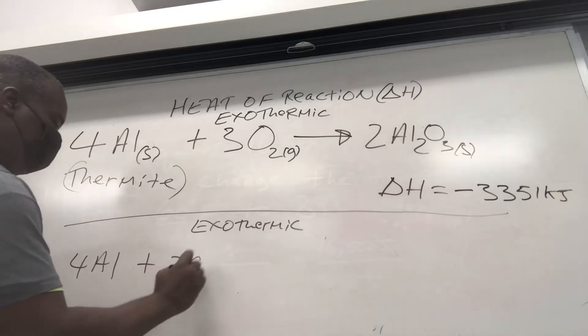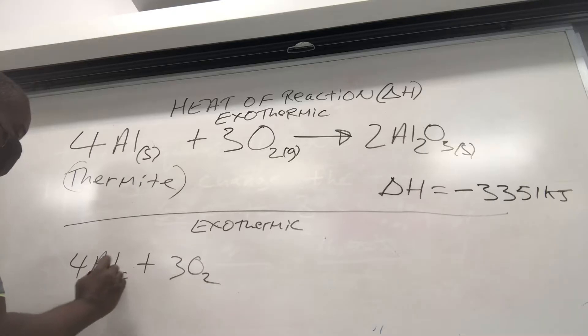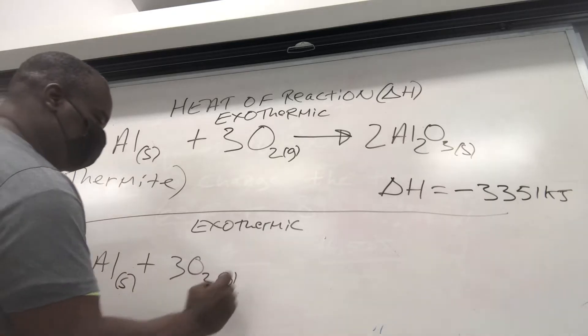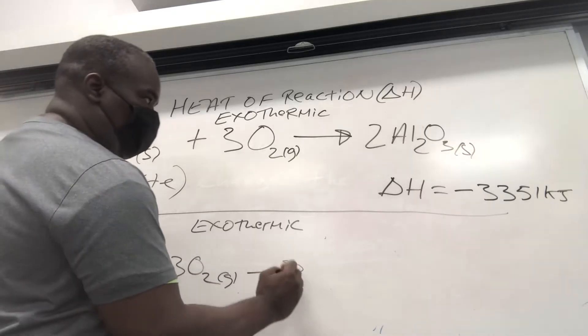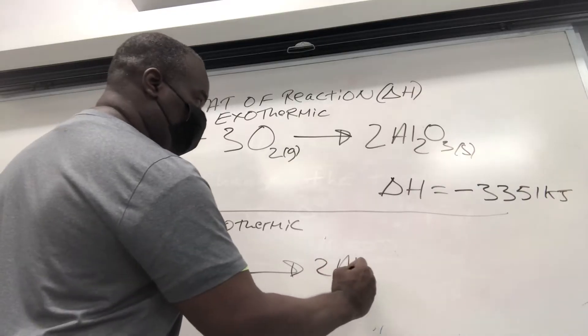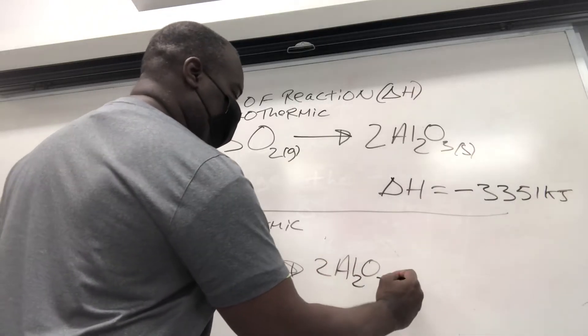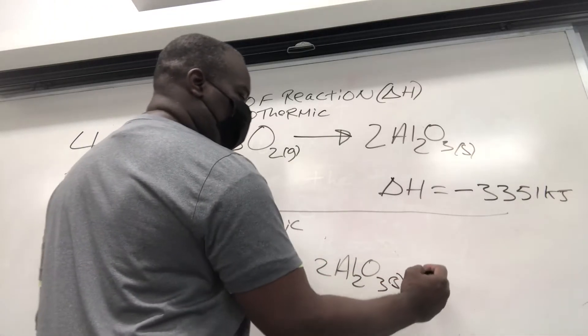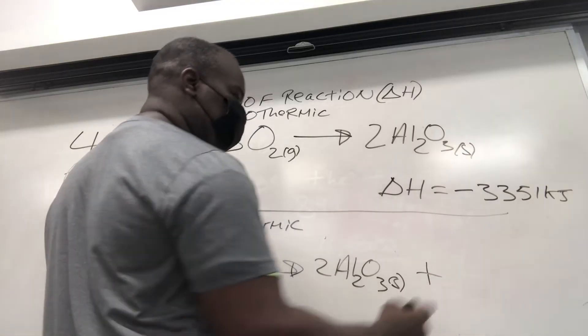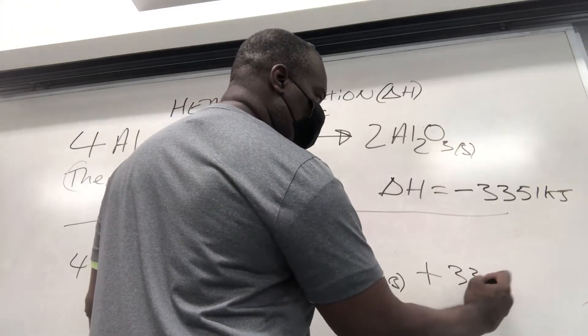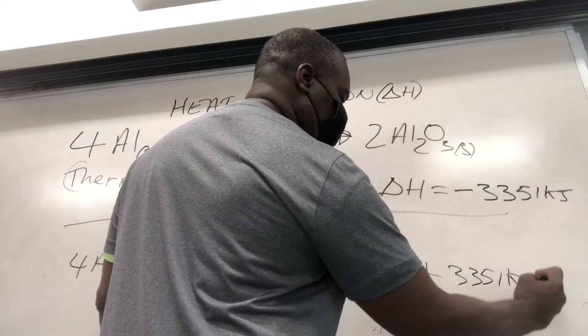plus 3O2. It already phases in solid gas. Arrow 2AL2O3, solid. Now we're going to put on this side 3351 kilojoules.